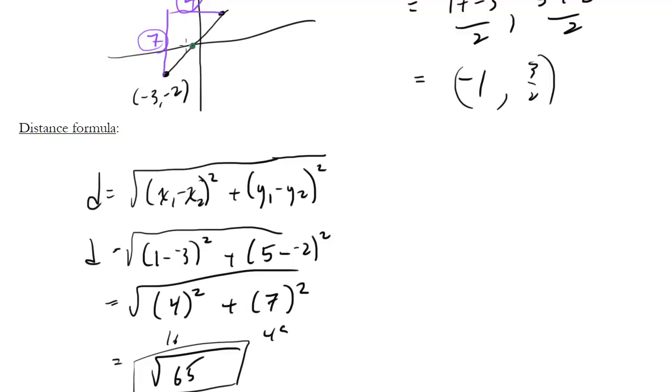And notice, 7 squared plus 4 squared is going to equal this side squared, which you'd have the square root of the sum of these, and that basically gets you the distance formula. The distance formula is just the Pythagorean theorem rewritten.